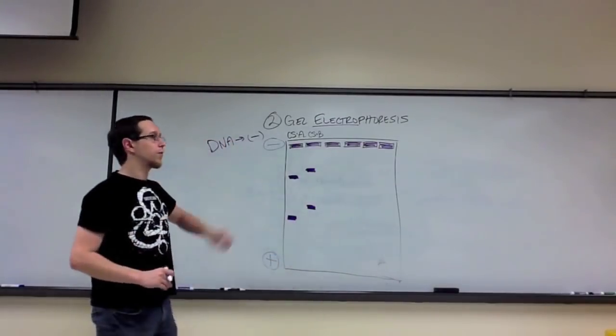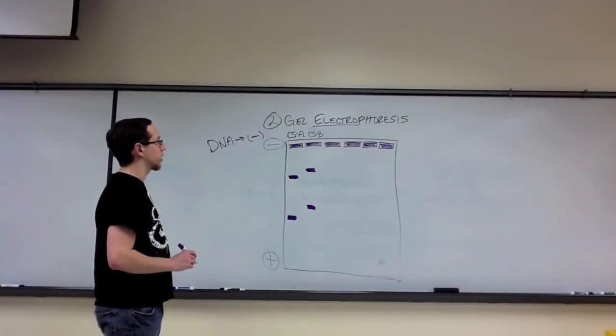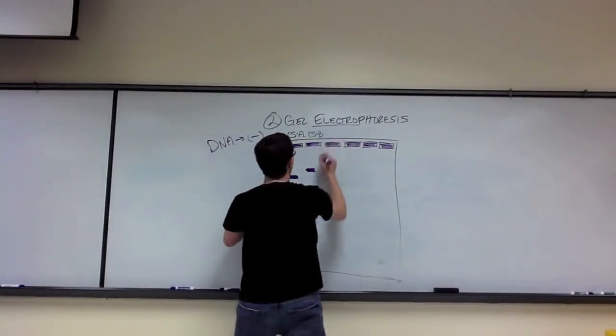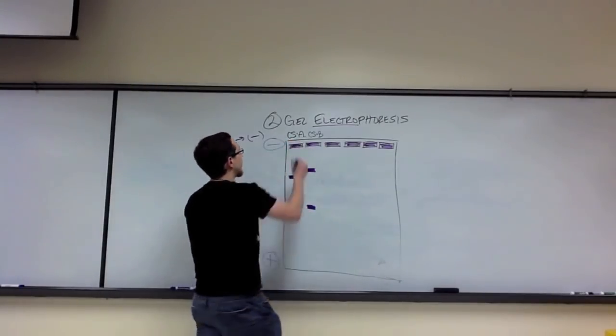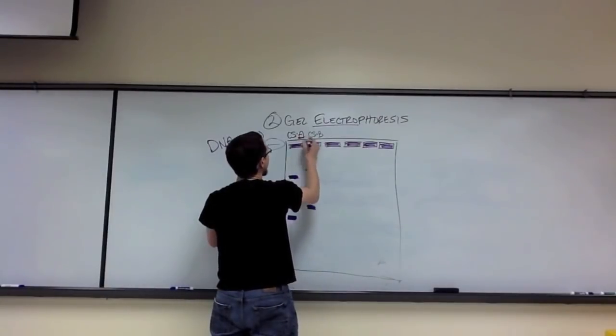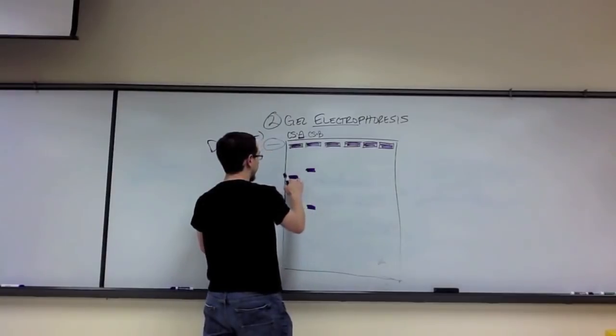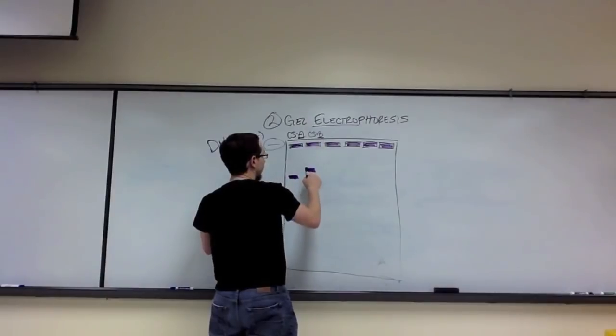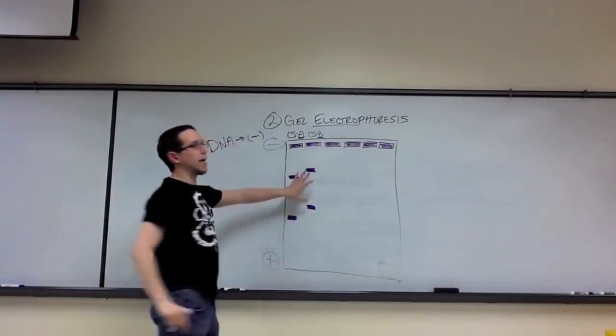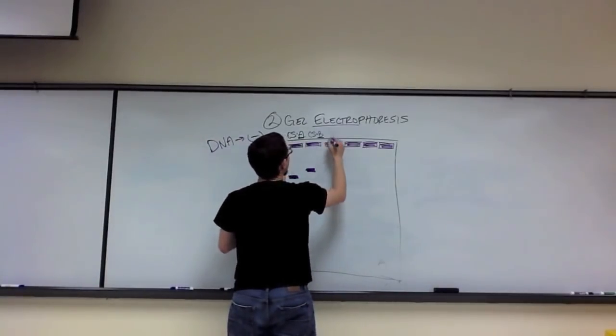So, what we're going to want to look for is exact matches to each of these in our suspect lanes when they're cut with their respective enzymes. When we cut with enzyme A, we want to find bands in the suspect lanes that exactly match these two bands. When we cut with enzyme B, we want to find bands that run at the same level in the enzyme B lane.